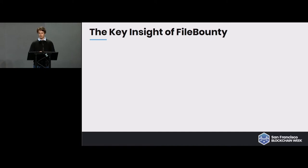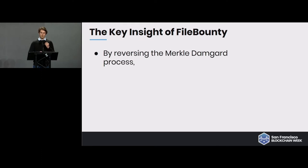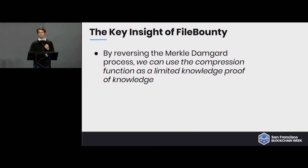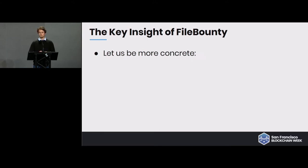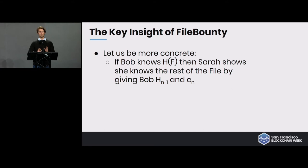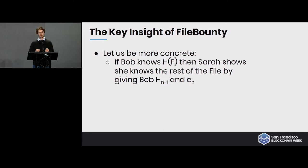Why is that relevant? This is the key insight in File Bounty. By reversing the Merkle-Damgård process, you can use the compression function as a proof of knowledge — more precisely, a limited proof of knowledge that leaks at most 64 bytes of a chunk. If Bob knows the file hash, seller Sarah shows she knows the rest of the file by giving the intermediate state just before the end of the process plus the final file chunk, convincing Bob she knows the file because there's no way she could have produced those two pre-images without knowing the file content.